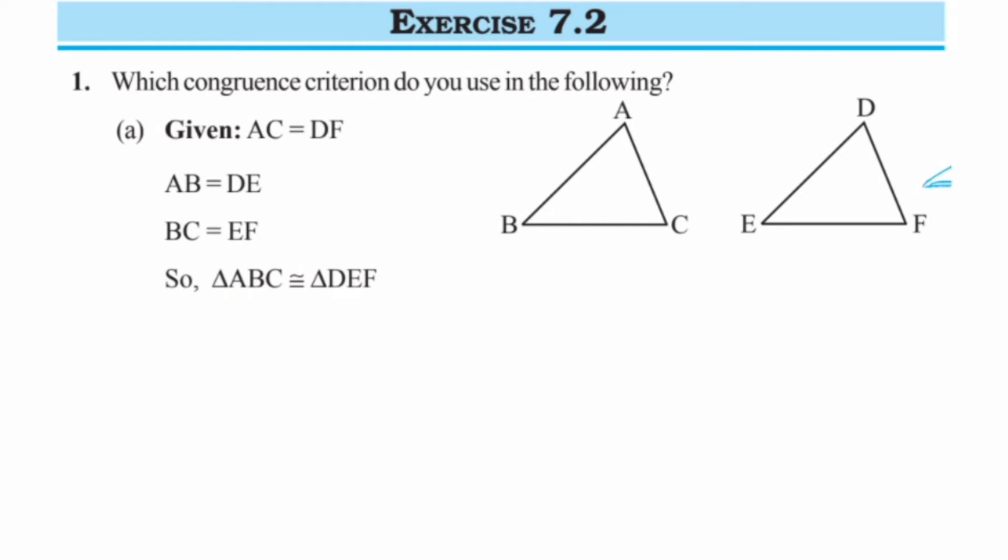The first thing given is AC and DF are equal, so AC is this and DF is this, so these two sides are equal. And the second condition is AB is equal to DE, so AB is here, this is the second line segment.